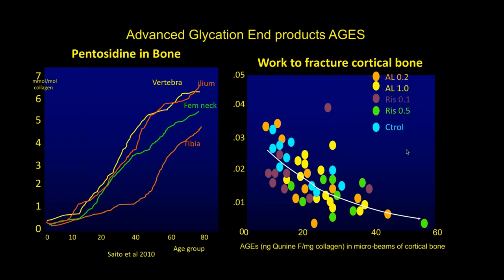In addition, with aging or with prolonged anti-resorptive therapy, the amount of pentosidine sugar cross-linking collagen increases. When you cross-link collagen with sugar you make it brittle — like sugar candy that can break your teeth. In animal studies with alendronate or risedronate, as the concentration of pentosidine increases, the work to fracture becomes lower — it's easier to snap a bone because it's more mineralized and more cross-linked with sugar. That's one of the limitations of the anti-resorptive drugs.